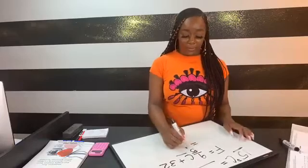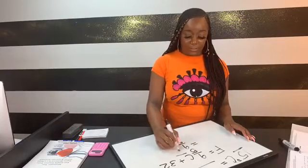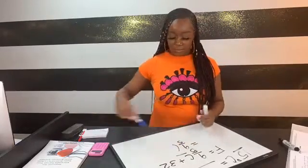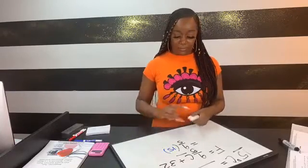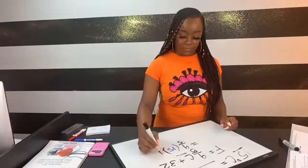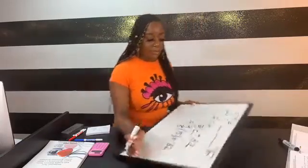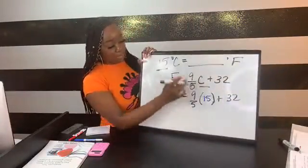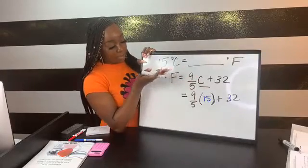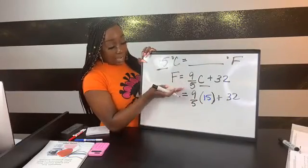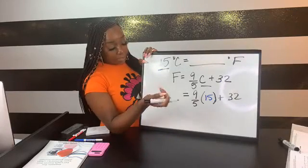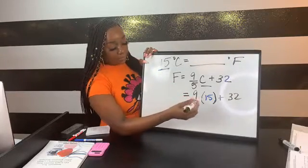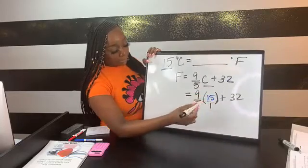We're going to rewrite it. We're going to say nine-fifths times 15 plus 32. From here to here, we're just substituting our values. That's why I like to stack my work, so I can see how I progress. In the event that I make a mistake, I'm able to go back and fix it.